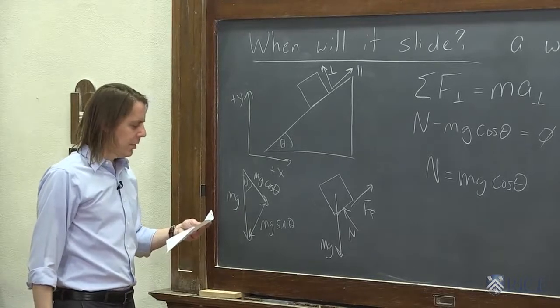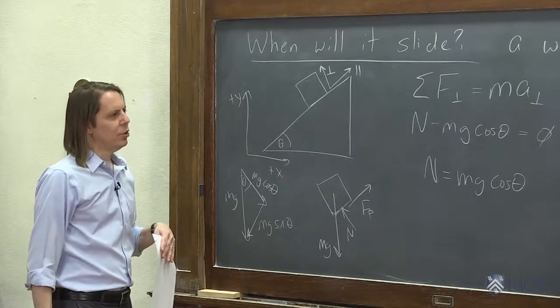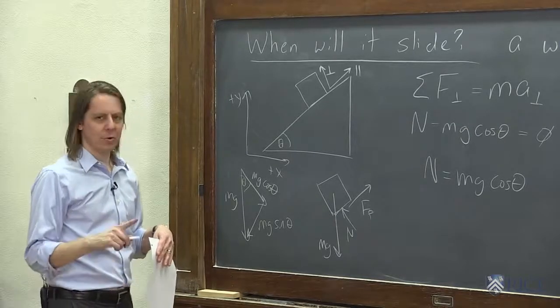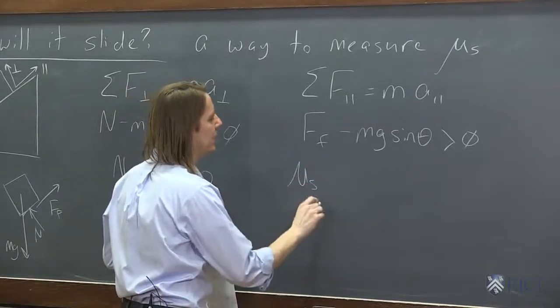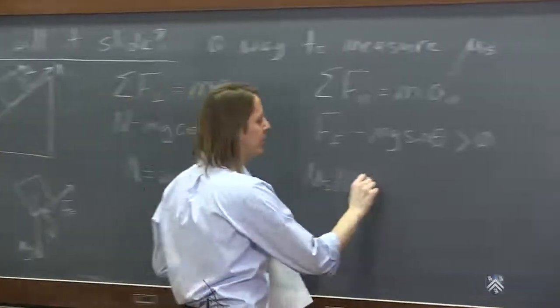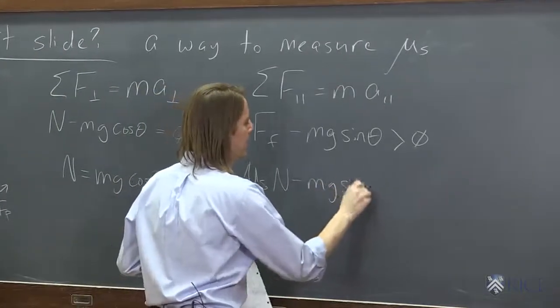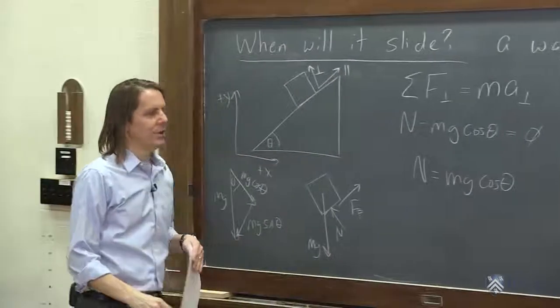All right. So now, the friction force, what is it? It's always mu times the normal force. So the static friction coefficient, mu s times N. And then the rest we know, minus mg sine theta must be, or what happens when that becomes greater than zero? And we get an acceleration.